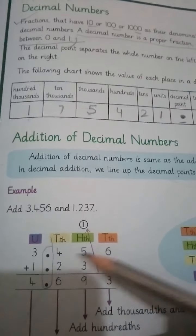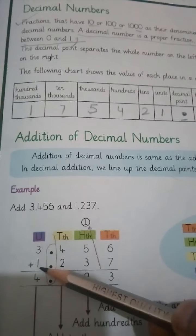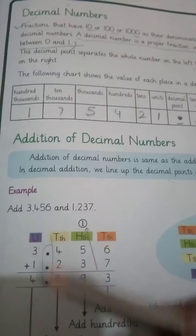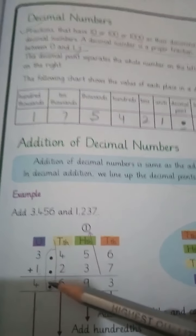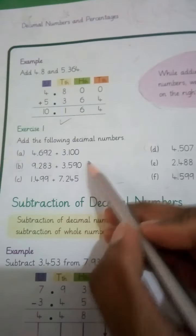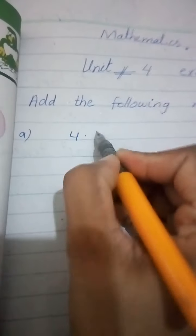The number in the units place is written under units, and when we line up the decimal points it is easy to add. Now, on book page 48, Exercise 1 is 'Add the following decimal numbers.' You have to add these numbers — it is very easy. The first question is 4.692 plus 3.100.